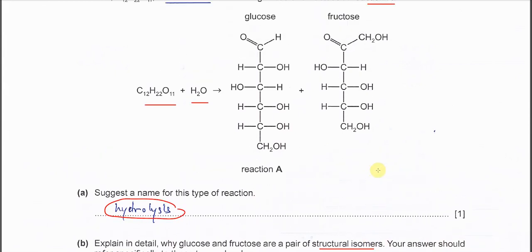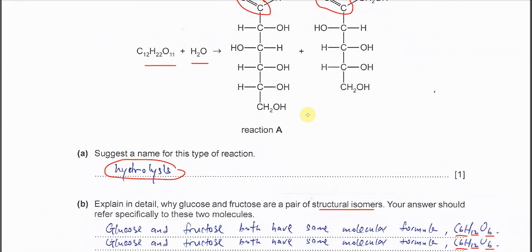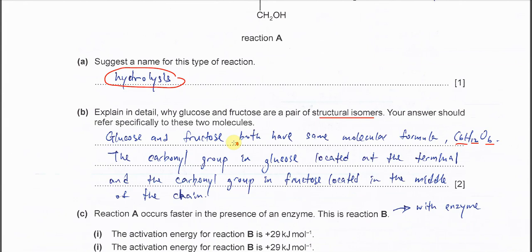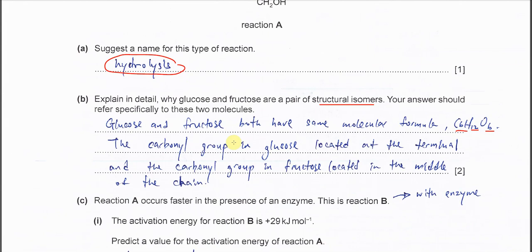The difference is the positions of the functional group. For this one, the carbonyl carbon or carbonyl group is at the terminals, but for fructose the carbonyl group is in the middle of the chain, not the terminals.